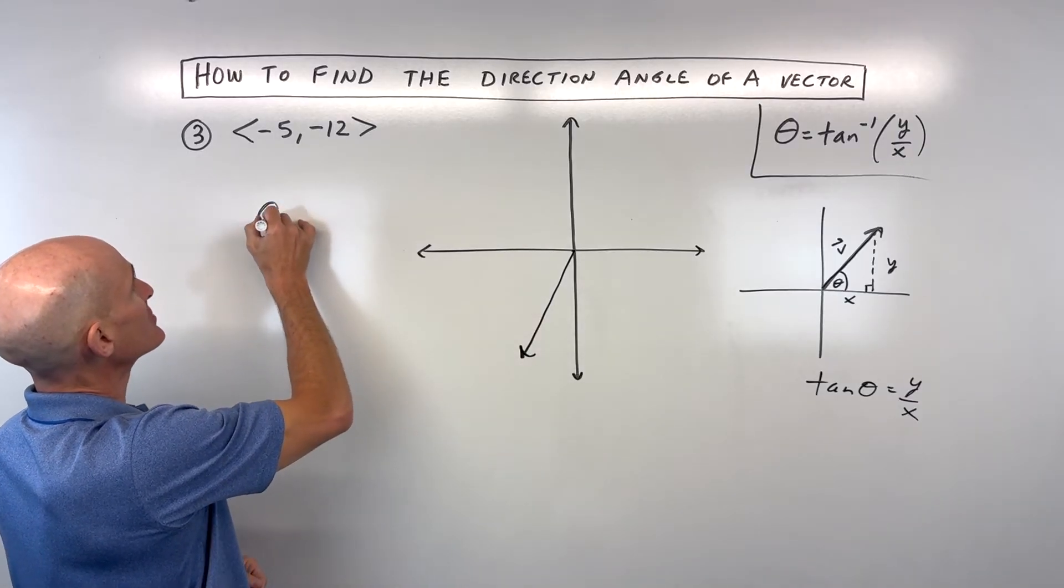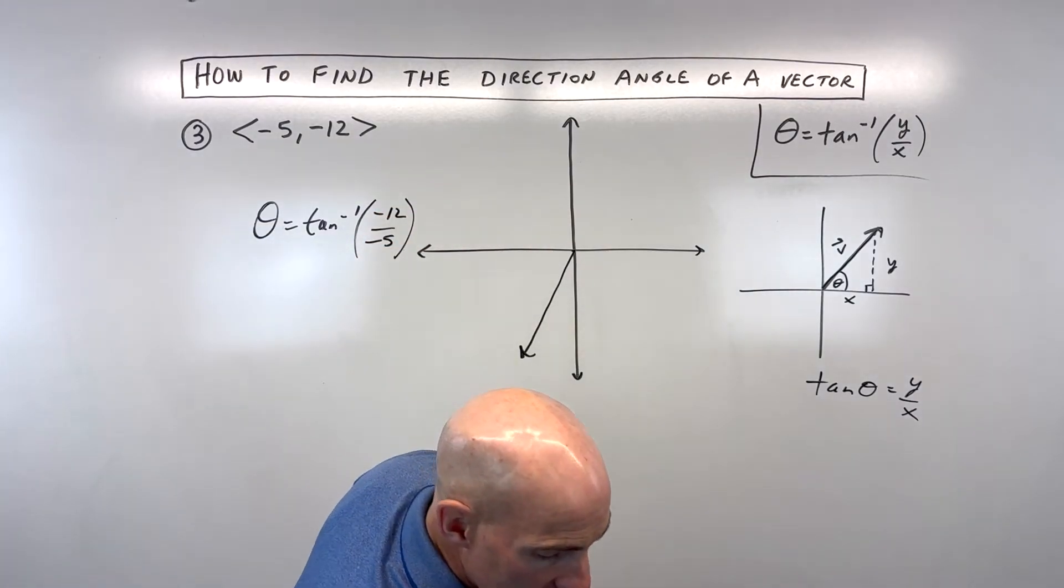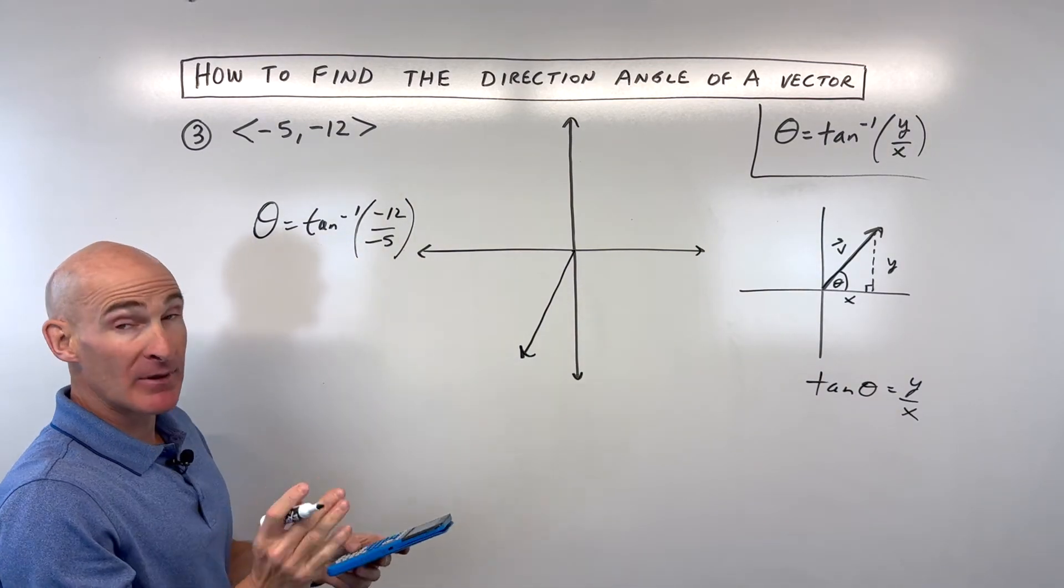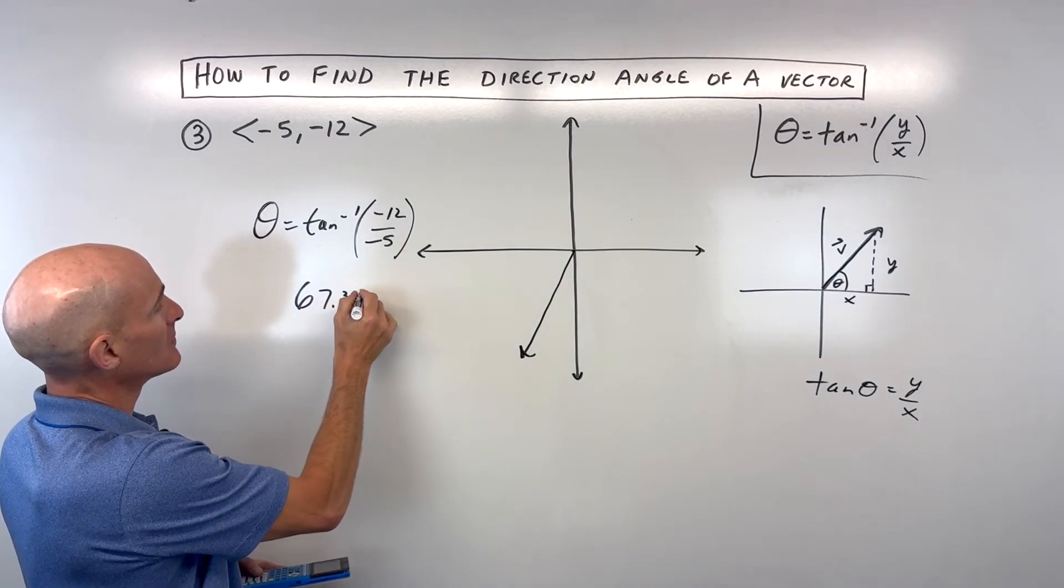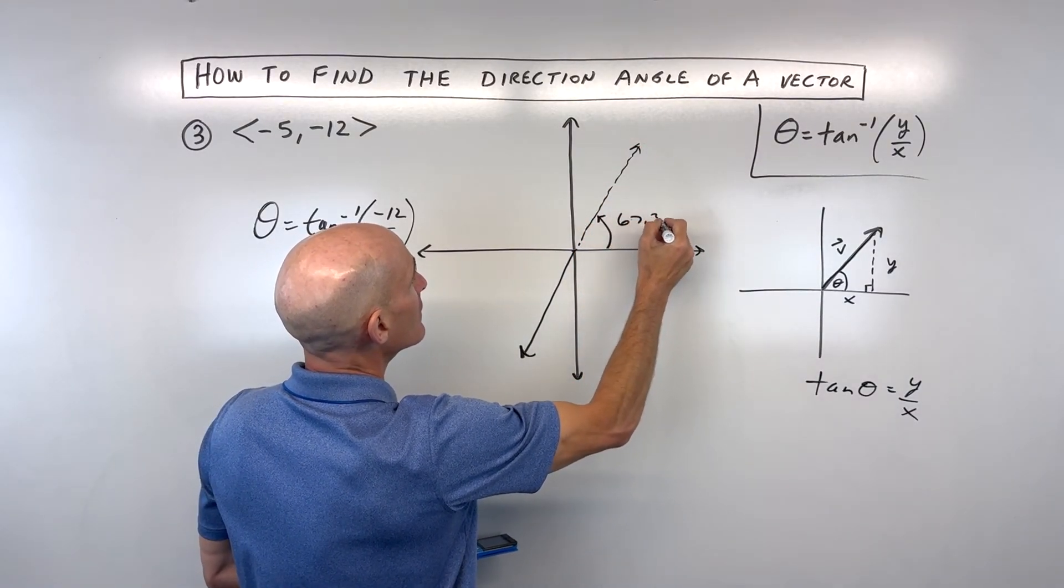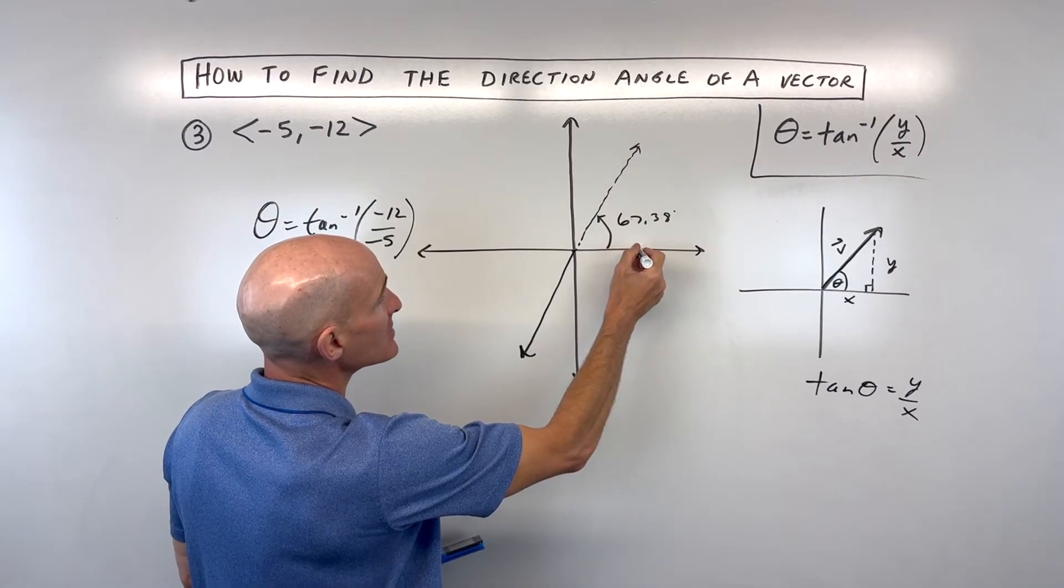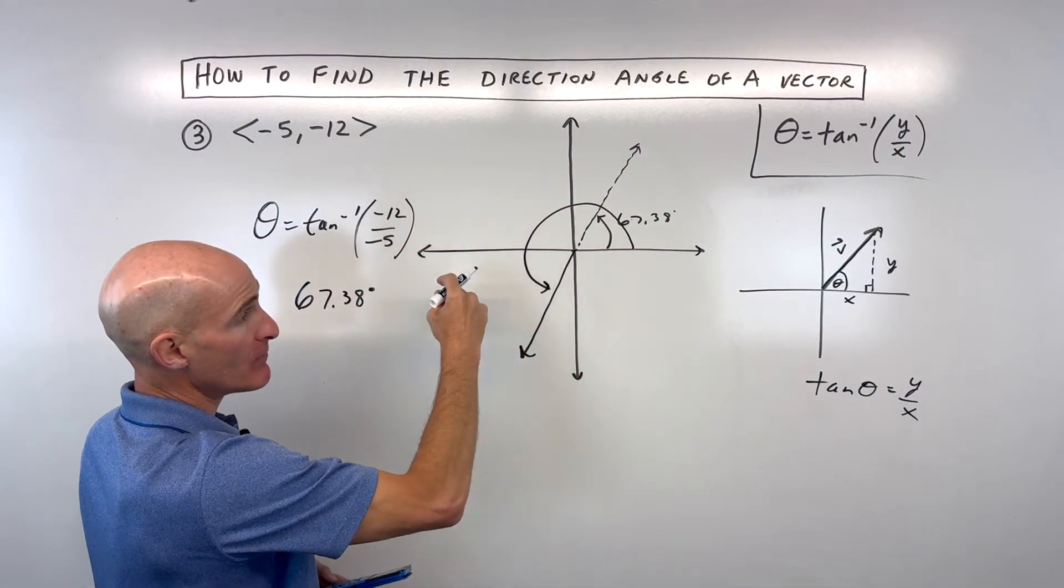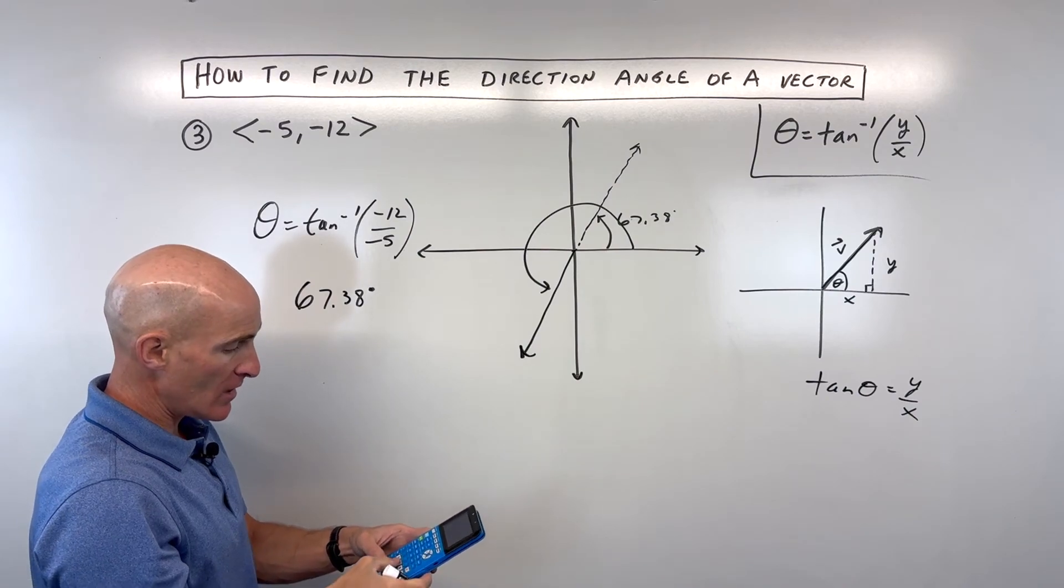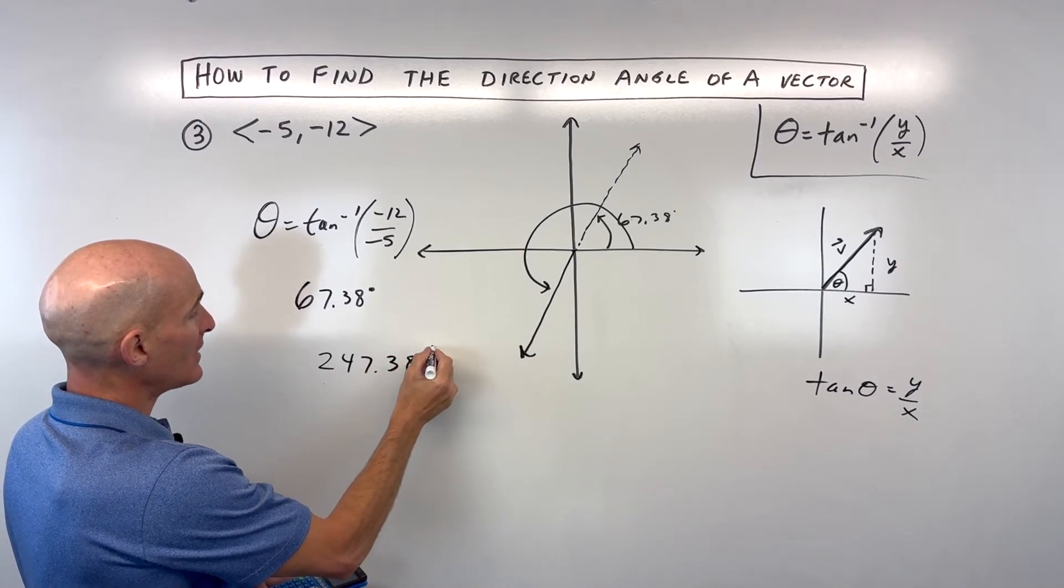We can use our formula. Theta equals the tangent inverse of the y component over the x component. Let's go to our calculators. Tangent inverse. And I'm getting the angle 67.38. 67.38 is right here, but you can see our vector is actually here in the third quadrant. So, how do we get the actual angle that the vector makes with the positive x-axis measured counterclockwise? Well, you can see we're going to have to add an additional 180 to the 67.38. So, that comes out to 247.38 degrees.